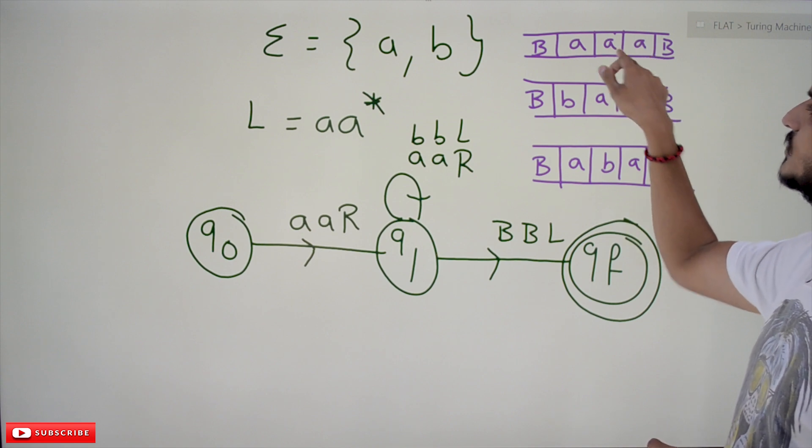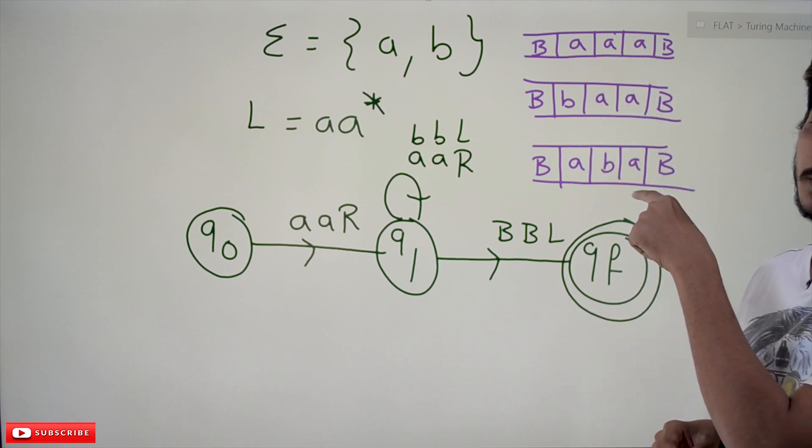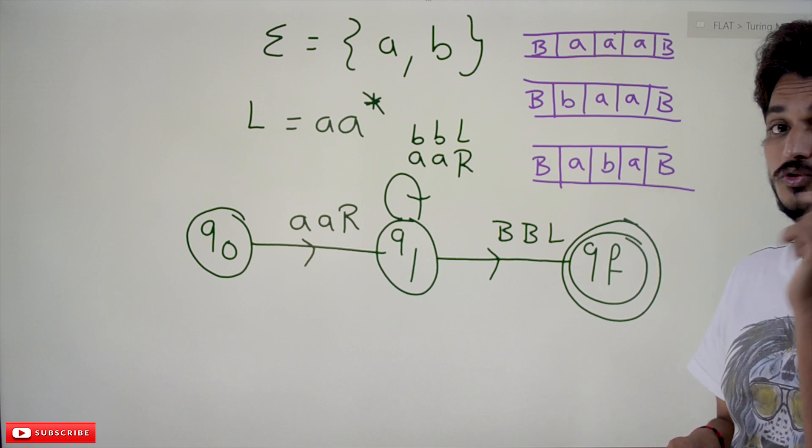So A A A, this input string should be accepted. B A A, this should not be accepted. Our Turing Machine has to reject it.